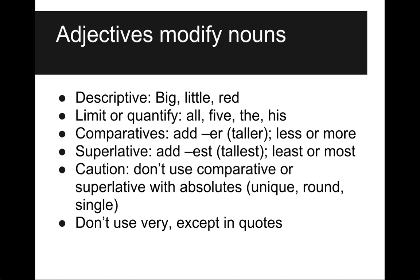Adjectives always modify nouns. They might be descriptive, like big, little, or red. They might limit or quantify — all, five, the, or his. There might be comparatives, like adding '-er' to get 'taller,' that indicate less or more. Or they might be superlative, adding '-est' as in 'tallest,' or using least or most. Keep in mind those are two different things — less or more, least or most.